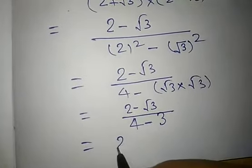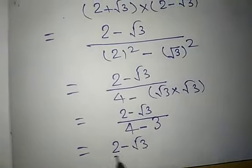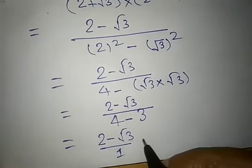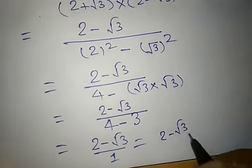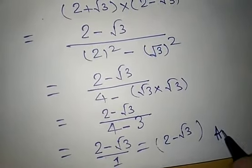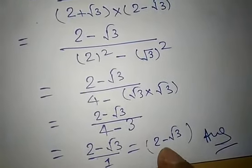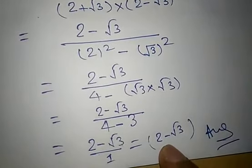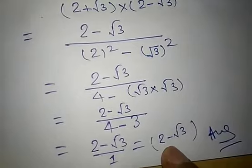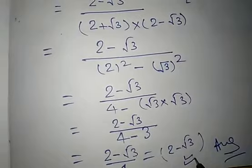We have 2 minus root 3 by 1, which is written as 2 minus root 3. As you see, the irrational number is completely removed from the denominator. So this is your final answer.